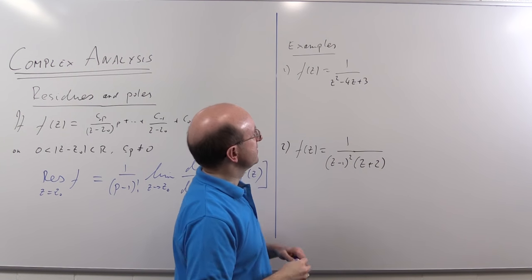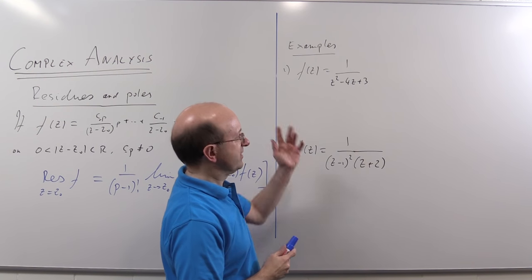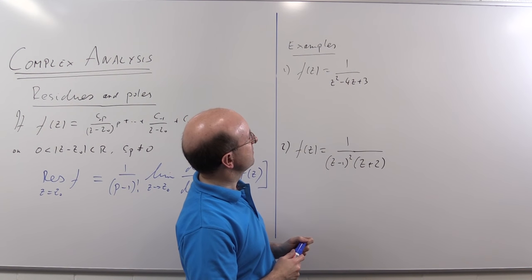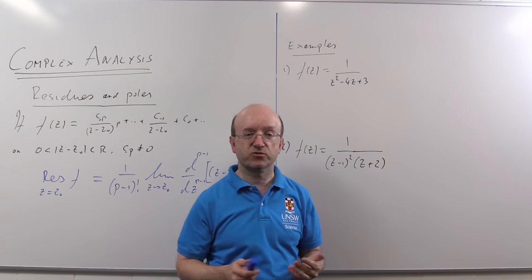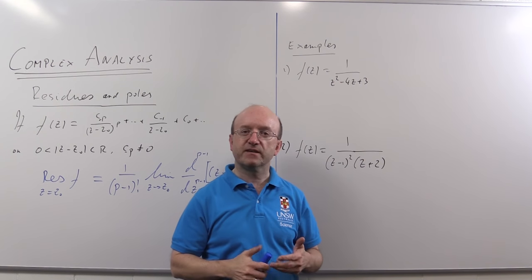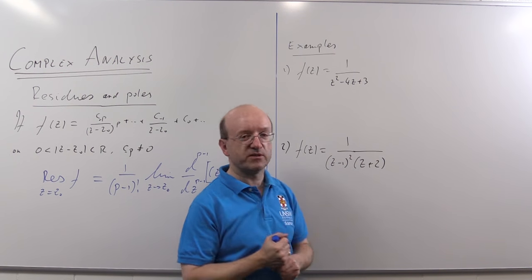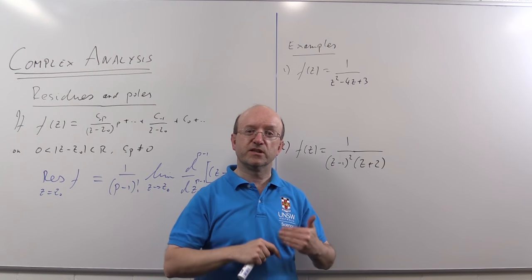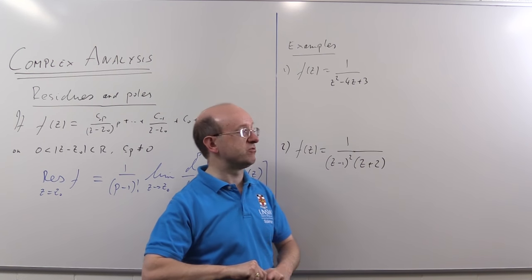So here are my first two simple examples. 1 upon Z squared minus 4Z plus 3. And what we're going to find here is the residue at one of the zeros of the denominator, and we'll take Z equals 3, which is one of the zeros. And what we're going to have there is a simple pole, because this quadratic here will factorize into Z minus 3 times Z minus 1, so the denominator has two simple zeros. One over that function, therefore, will have two simple poles. That's what I talked about in the video on zeros and poles.